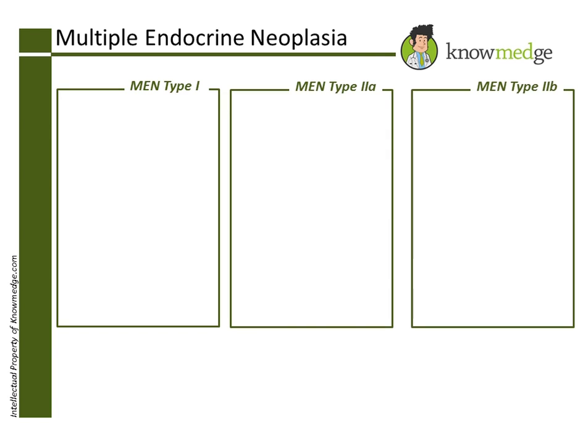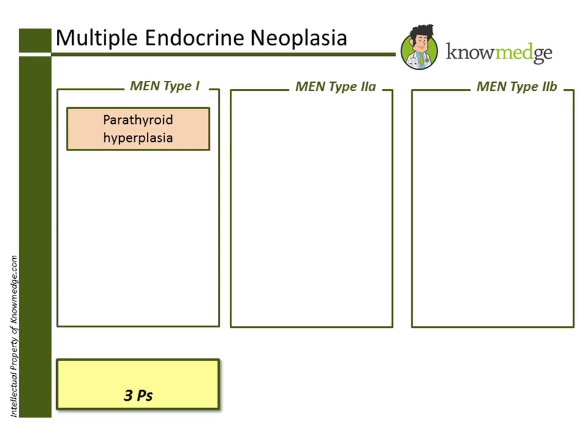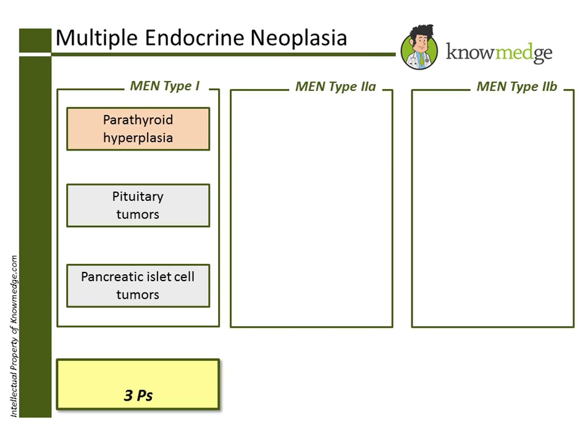A useful mnemonic that can be used to remember each type of MEN is the following. Type I, the three Ps, stand for parathyroid hyperplasia, pituitary tumors, and pancreatic islet cell tumors.